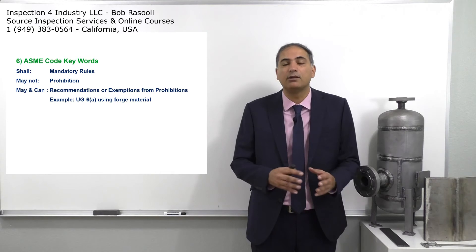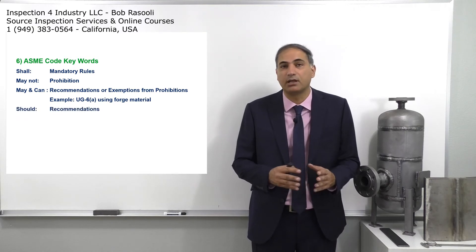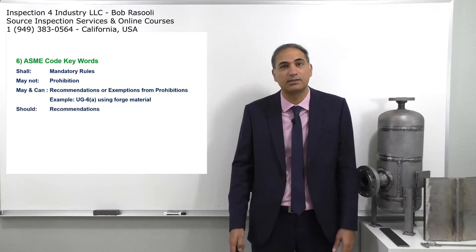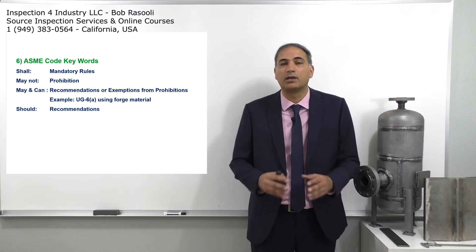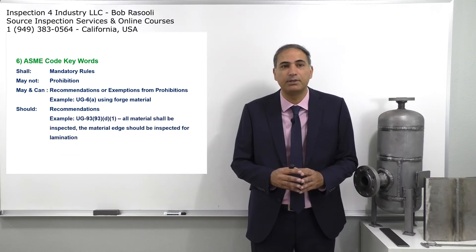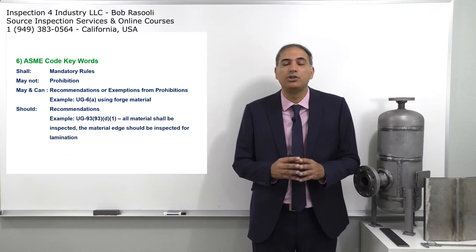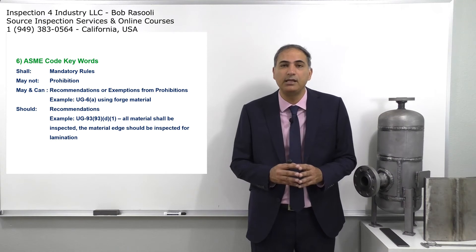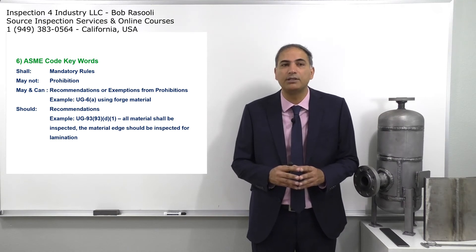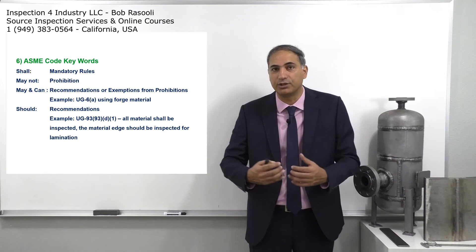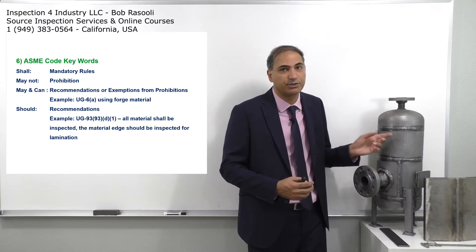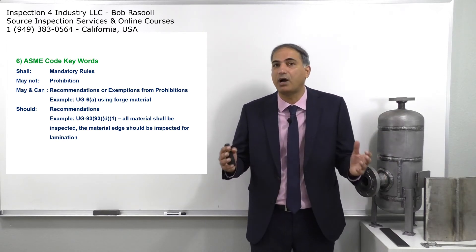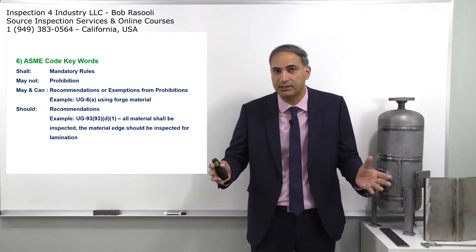Next is 'should,' which is a recommendation — it's not a mandatory requirement. For example, UG-93 D1 says all material 'shall' be inspected. This means all receiving material — for this pressure vessel, we receive this plate material SA-516 Grade 70, which is a common pressure vessel material.